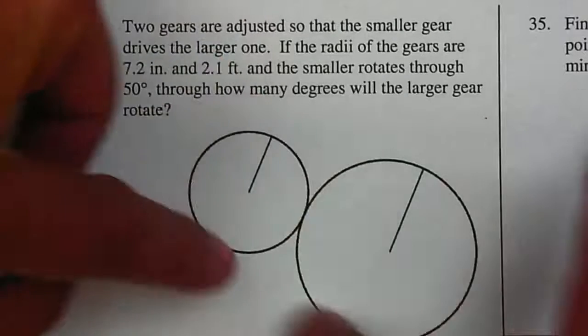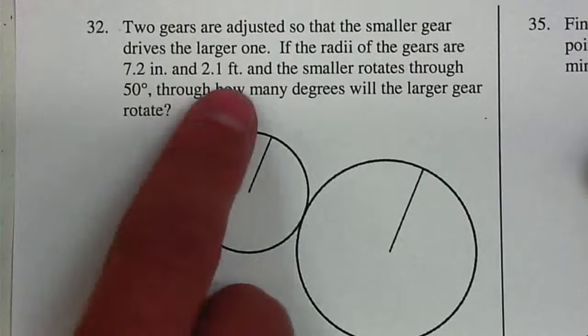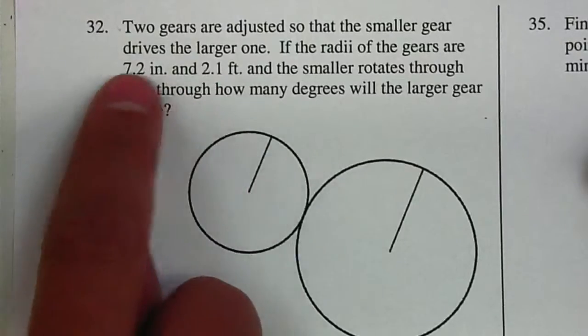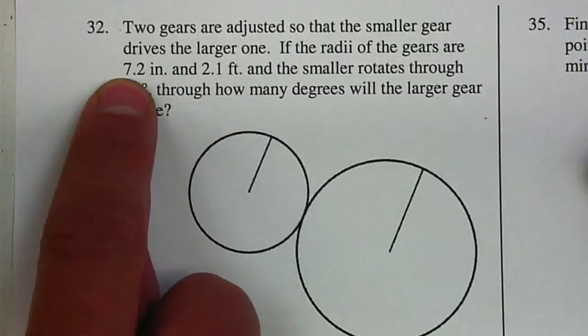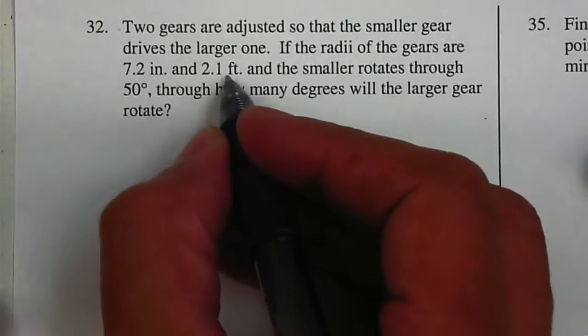In this case they both are rotating, and they give you two radii. Now if you notice they are in different measurements, so I need to decide: do I need to convert this one to feet, or this one to inches?